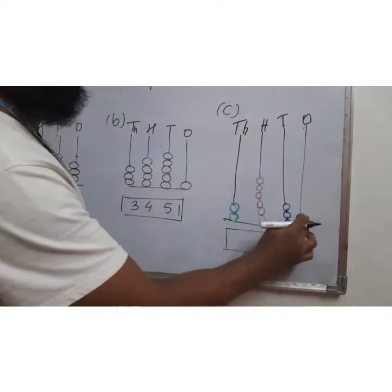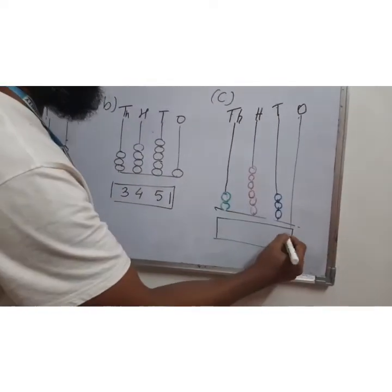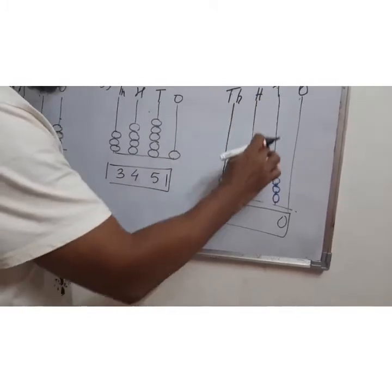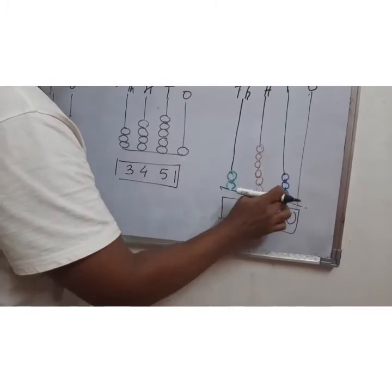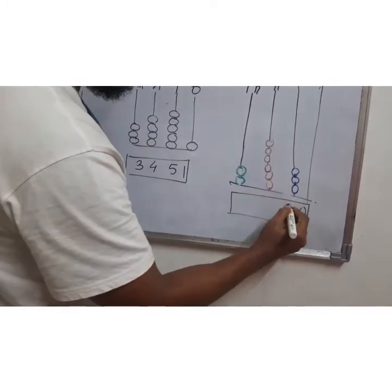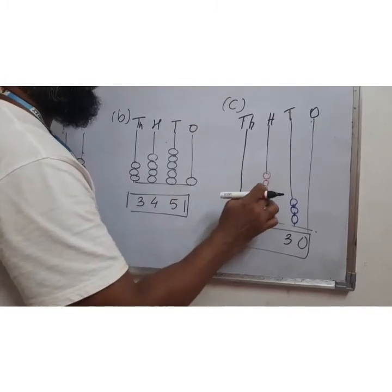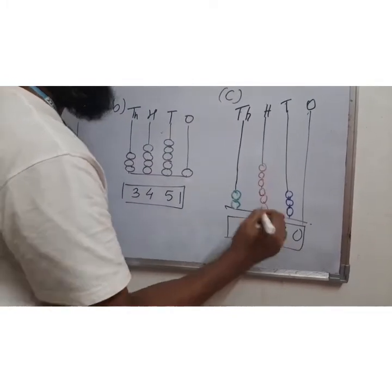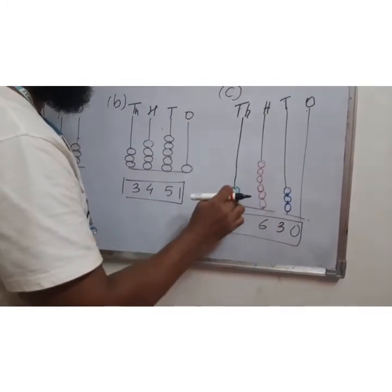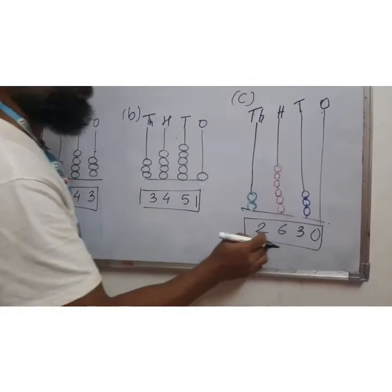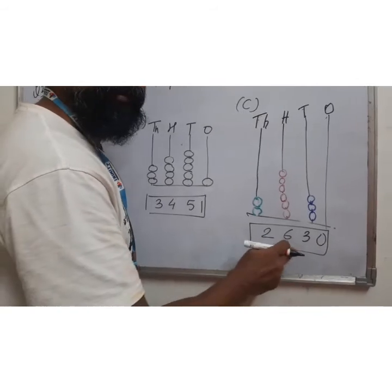Even in this, ones in the house there is nothing. If there is nothing, what I will do is I will write 0. Tens, in the lining how much is it? 1, 2, 3. Three beats, I will write 3. Hundreds in the line, how much is it? 1, 2, 3, 4, 5, 6. Thousands in the line, 2 beats, 1, 2. So the number is 2, 6, 3, 0. That is 2,630.